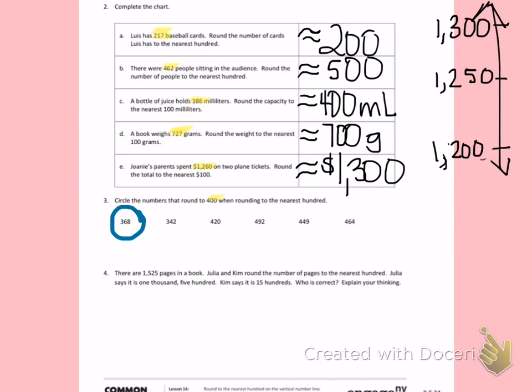342 is not past the halfway number, so I will not round 342 to 400. 420 is another number that is close to 400, so I will round 420 to 400. 492 is a number very close to 500, I will not round 492 to 400. 449 is as close to the halfway number as you can get, but it is still not past the halfway number, so I will round 449 to 500.